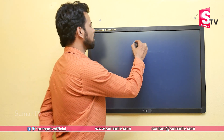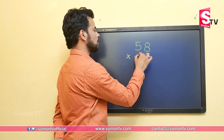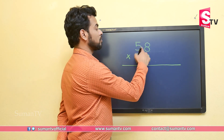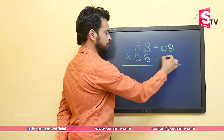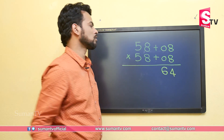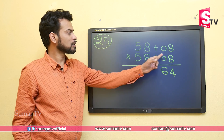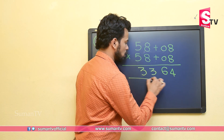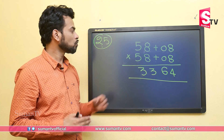Let's take one more example: 58 squared, meaning 58 multiplied by 58. Since 58 is plus 08 more than 50, in step one we multiply 8 by 8, which gives 64. In step two, we add 8 to the magic number 25: 25 plus 8 equals 33. So 58 squared is 3364.